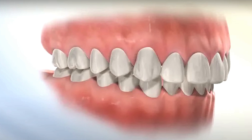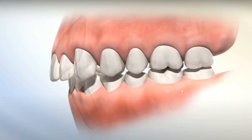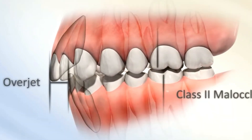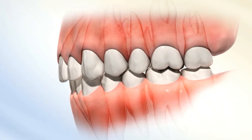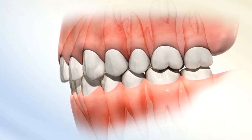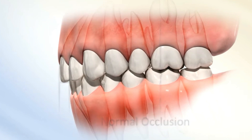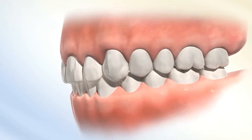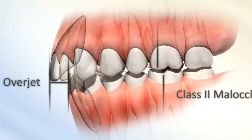Overjet. It is defined as the horizontal overlap of the incisors, or the relationship between upper and lower incisors in the horizontal plane. 2-3 mm overjet is the normal relationship. Increased overjet is more than 3 mm.